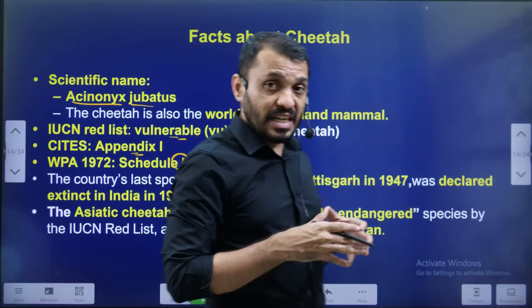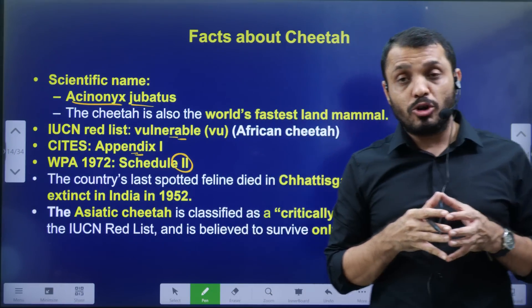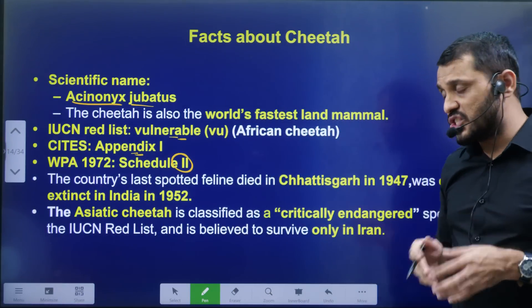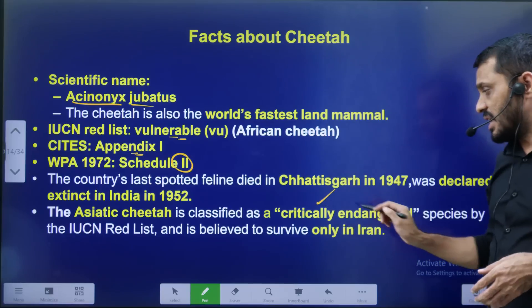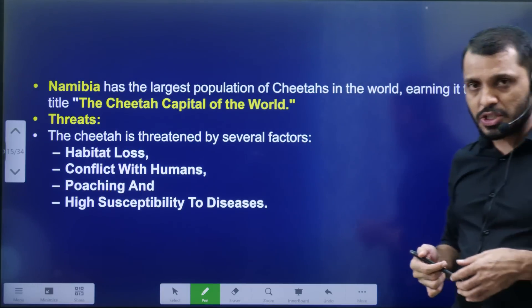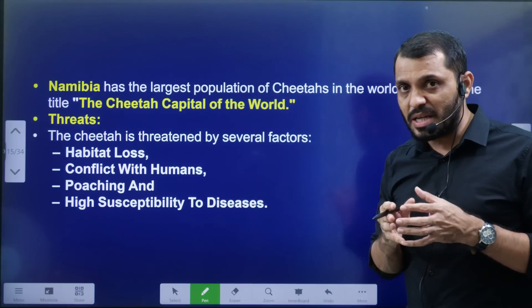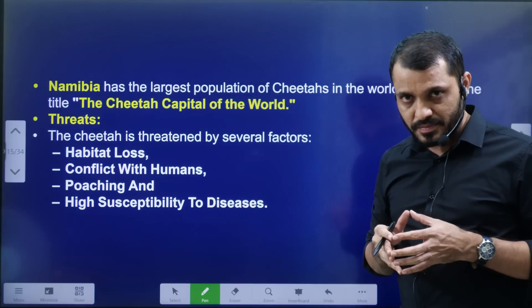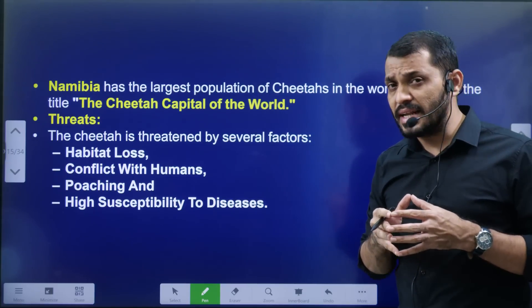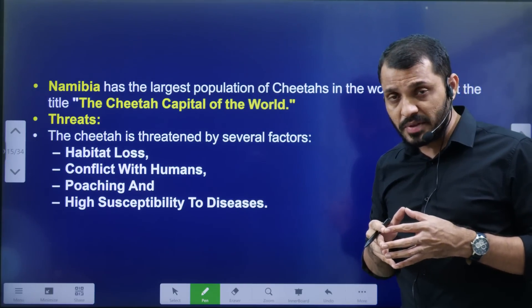The last Cheetah hunting in India was in 1947, and in 1952 the Government of India officially declared Cheetahs extinct. Namibia is known as the Cheetah capital of the world. The main reasons for Cheetah decline include illegal poaching, competition with other animals for food, and habitat loss due to forest destruction.